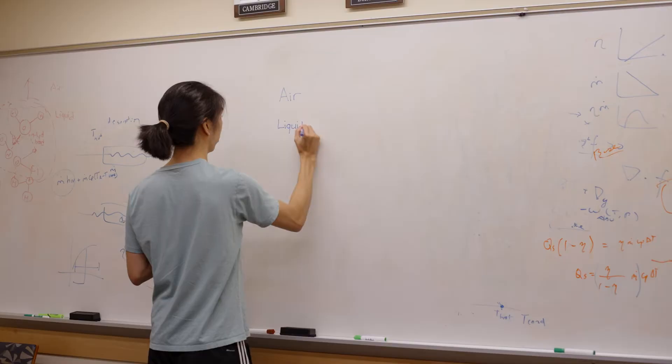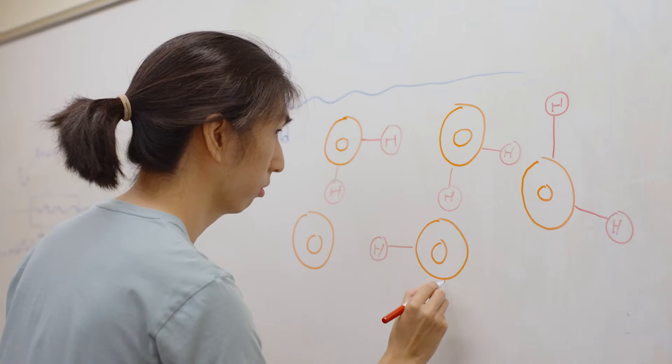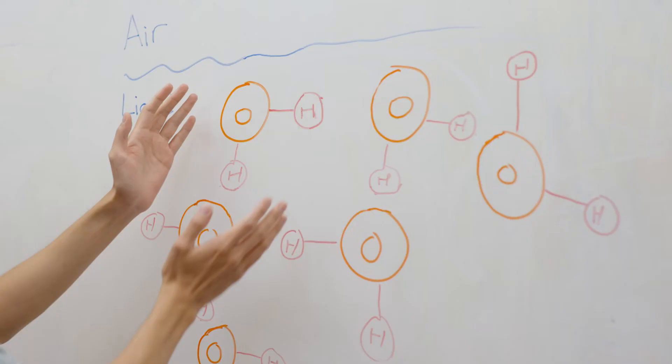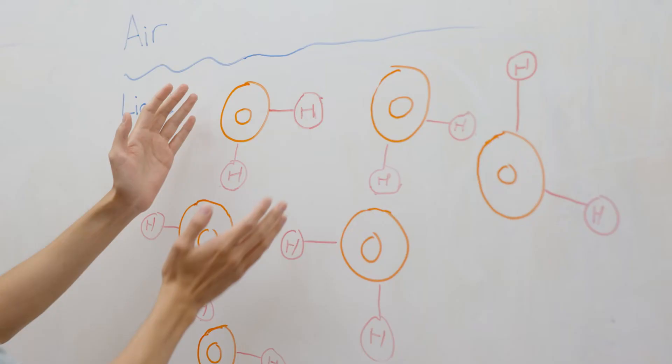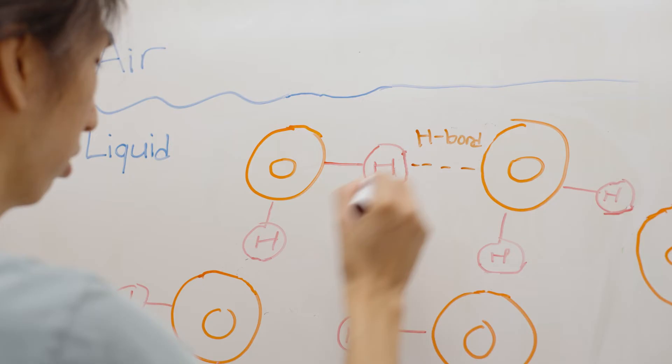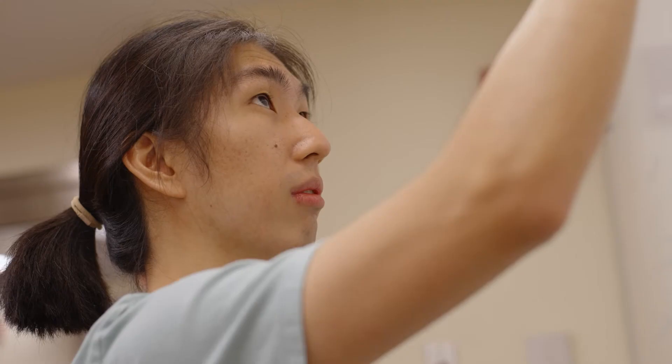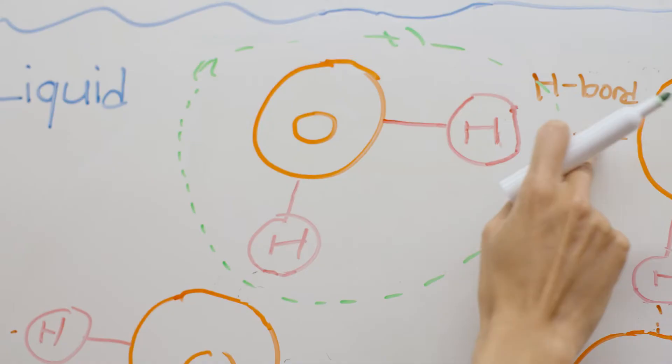The issue is that evaporation is fundamentally limited by the latent heat of evaporation. Water has a bent shape, and because of that, water molecules form very complex hydrogen bonding networks. You need to break these hydrogen bonds in order to evaporate water.